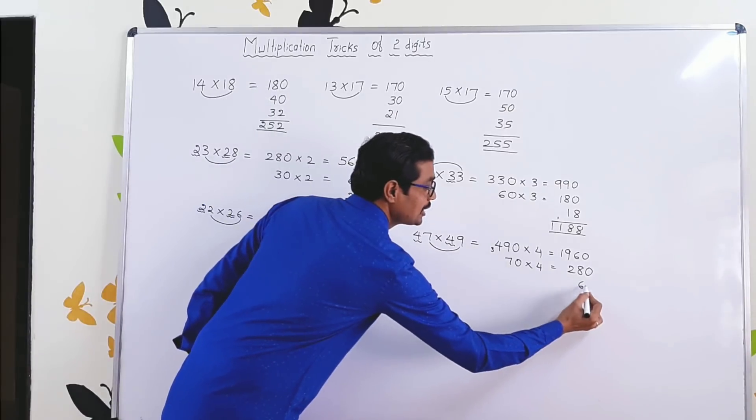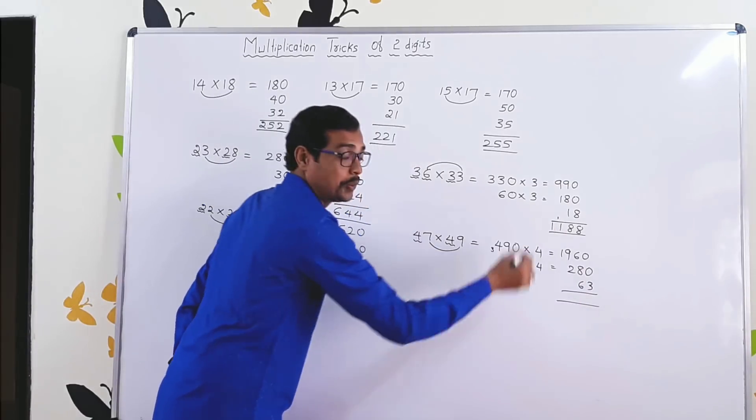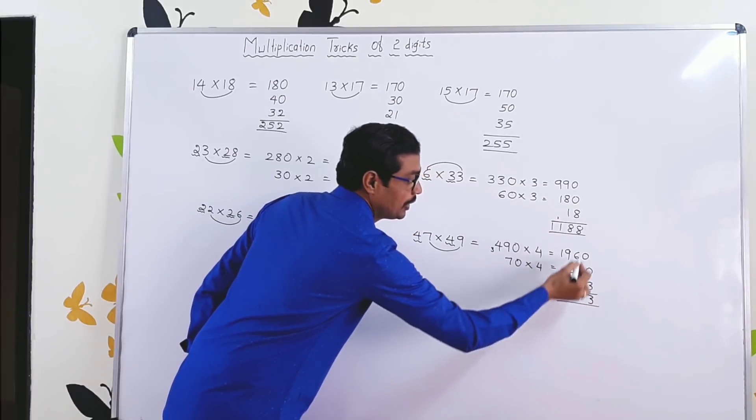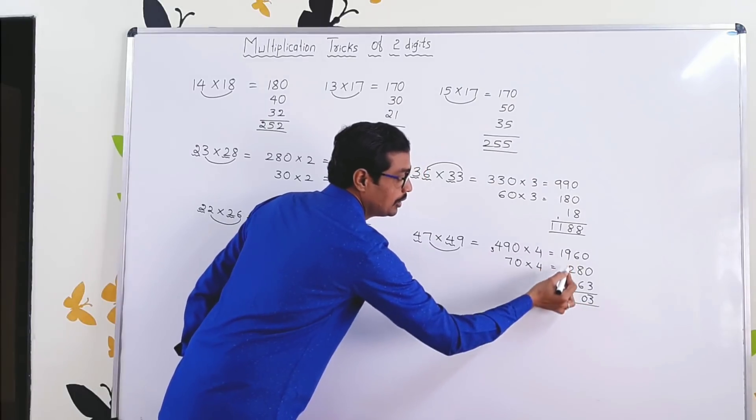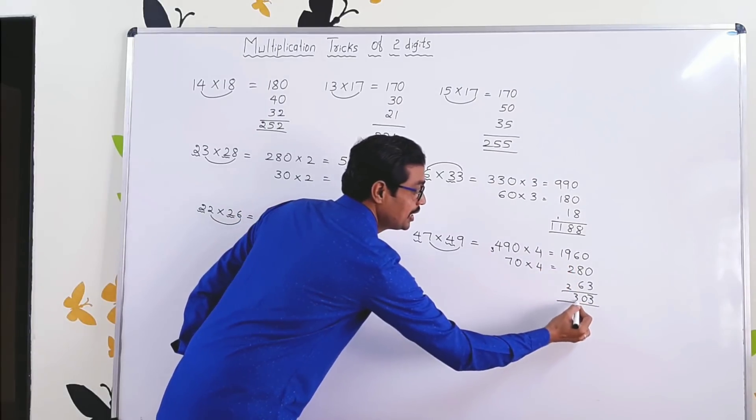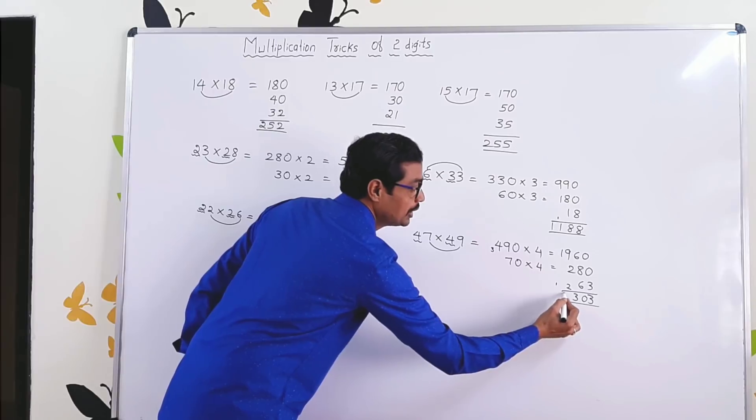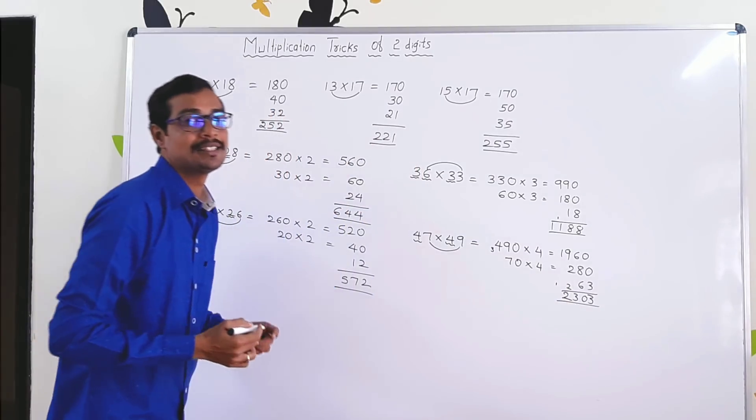7 × 9 is 63. So, total. 3. 8 plus 6, 14 plus 6 is 20. Carries 2. 9 plus 2, 11 plus 2 is 13. Carries 1. 1 plus 1 is 2. 2303.